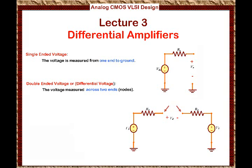You must pay attention to the polarity here. The polarity of the differential voltage VD states that the plus polarity is on the left-hand side. If you apply KVL, you know that VD will equal V1 minus V2. Remember that the current through the circuit is zero because it's an open circuit, so the voltage at one end is V1 while the voltage at the other end is V2. Then VD equals V1 minus V2.